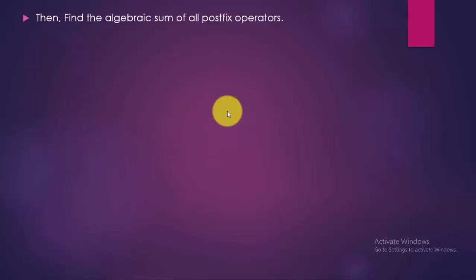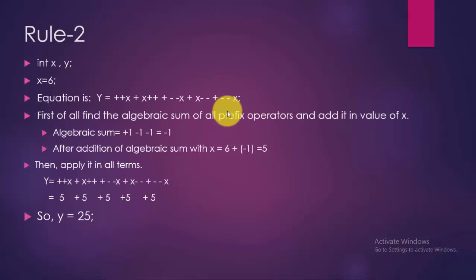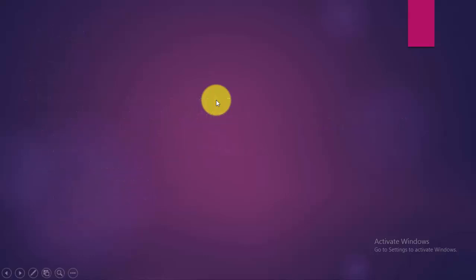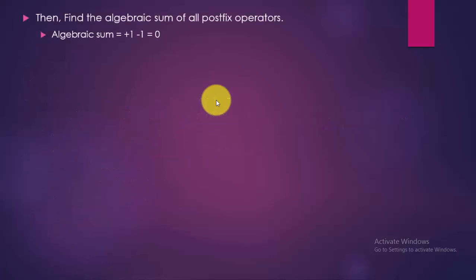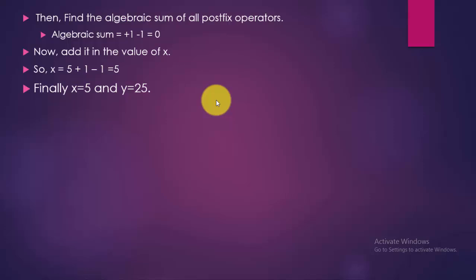Now find the algebraic sum of all postfix operators. Here the algebraic sum is +1 (from x++) and -1 (from x--), so the algebraic sum is 0. Add this to the value of x: x = 5 + 0 = 5. So finally we get x = 5 and y = 25 at last.